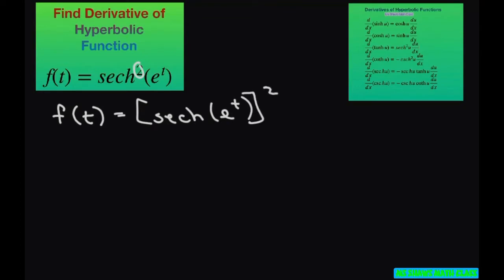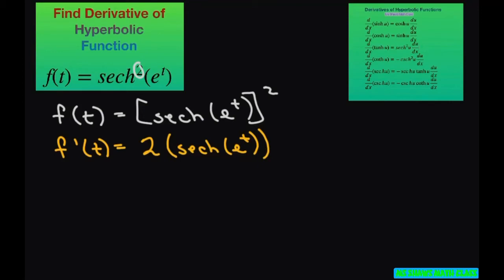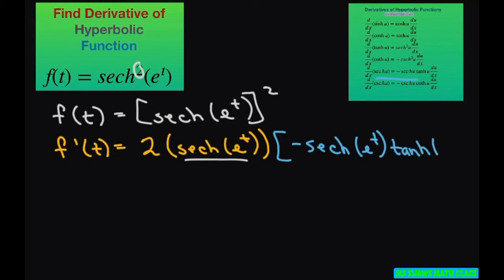This makes it easier to differentiate. So when you differentiate, f prime of t, use the chain rule. It's going to be two times hyperbolic secant of e to the power of t, and then you have to multiply by your inner function. The derivative of hyperbolic secant is negative hyperbolic secant of e to the t power times hyperbolic tan of e to the t power.